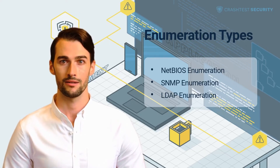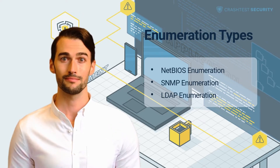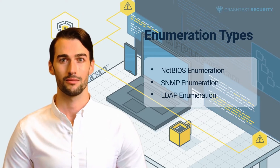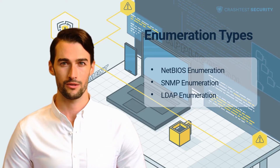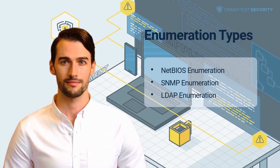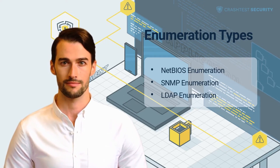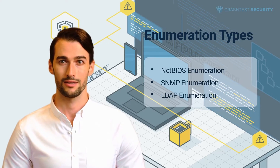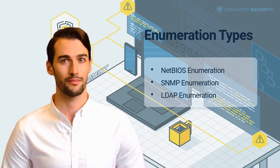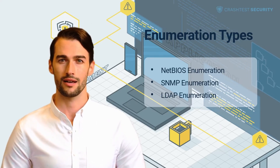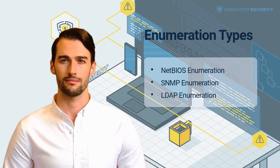SNMP Enumeration: The Simple Network Management Protocol simplifies the management of network devices such as routers, hubs, switches, etc. in the application layer using the UDP protocol. SNMP attacks enumerate usernames, group names, passwords, system names, and devices in the network.